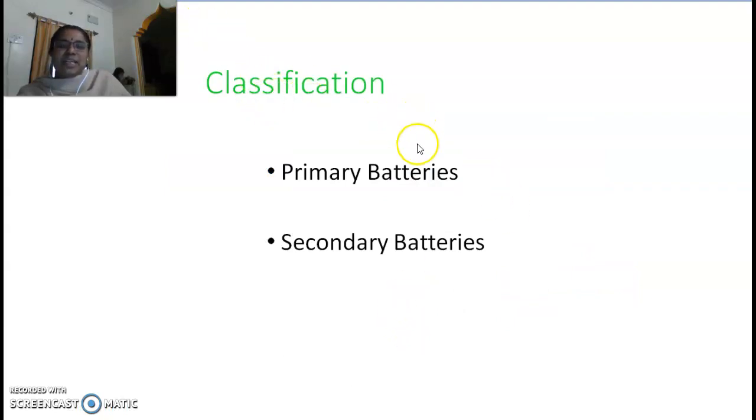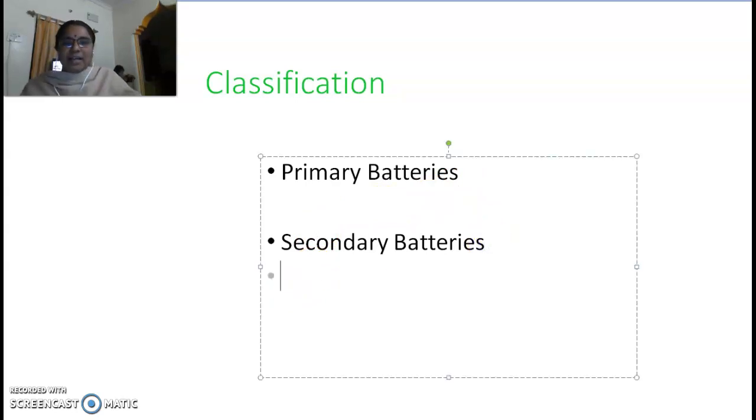This is classification. Batteries are mainly classified into two types, though you can say three types: primary batteries, secondary batteries, and if you want, you can also tell of fuel cells. These are the three different types.